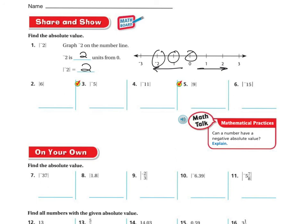6 is 6 spaces away from 0, so the absolute value is 6. Negative 5 is 5 away from 0, so it's going to be 5. And so on and so forth — do the rest on your own or with a partner, and I'm always available for you as well. Good luck.